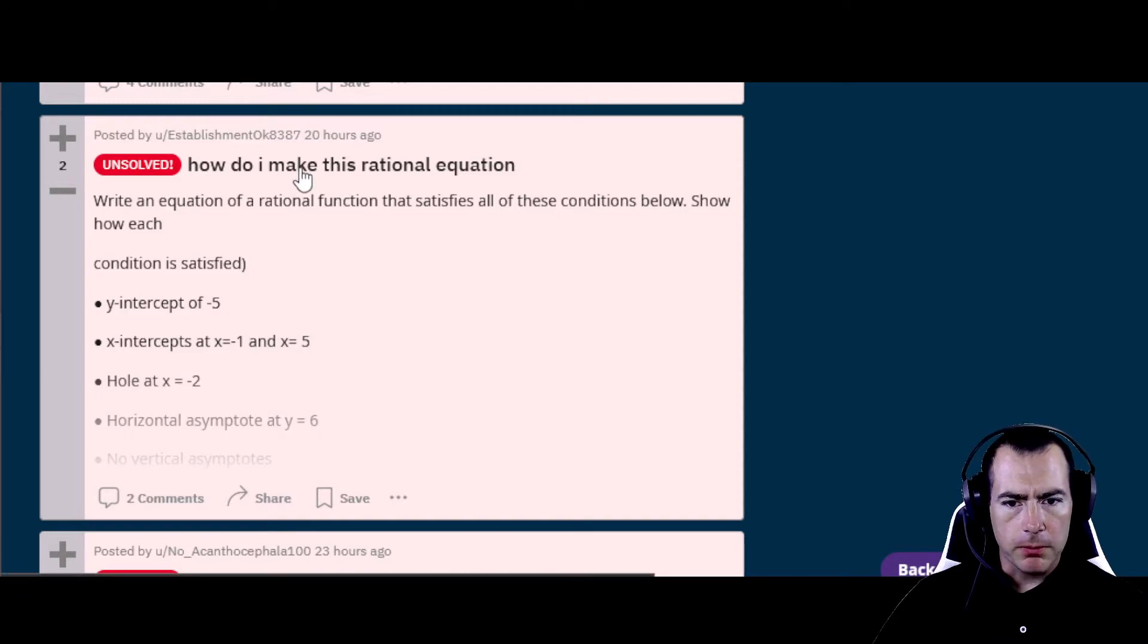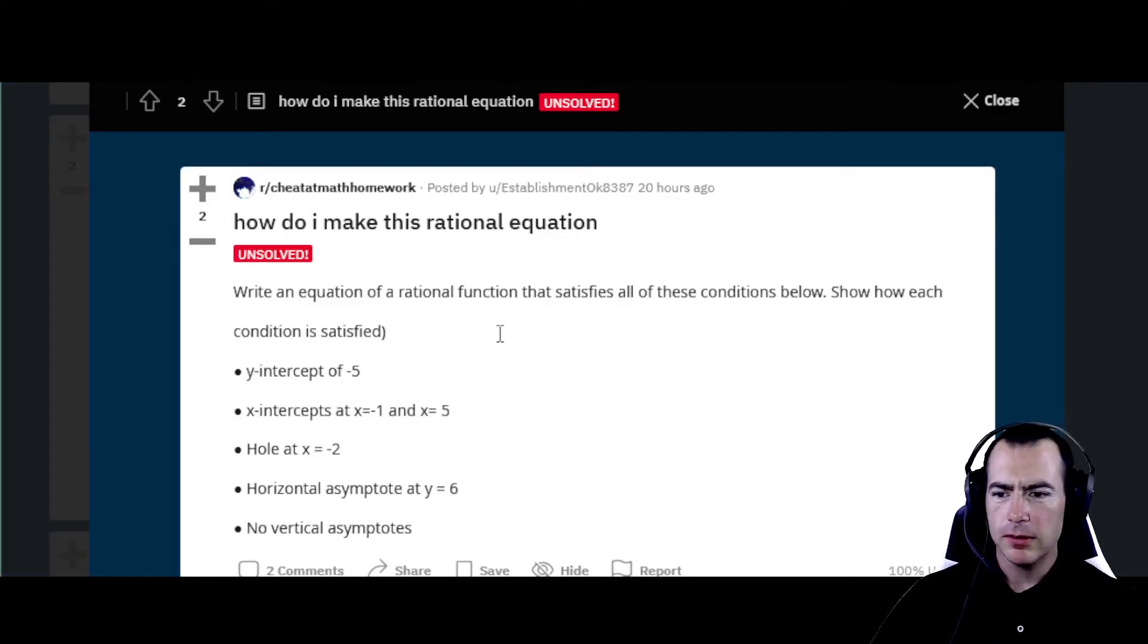All right, this one looks interesting. It says, how do I make a rational equation? Okay, I've seen a few of these where it has lots of different properties for the rational equation or rational function you're trying to build. Stuff like intercepts, holes, asymptotes, and you're trying to build these all into your equation. These are a lot of fun. Let me get my whiteboard all cleared out. And yeah, we'll see if we can give it a go. So what we need for this rational function is it needs to have a y-intercept of negative 5. It needs to have a couple of x-intercepts. It has a hole at negative 2. Some horizontal asymptotes. This is at y equals 6. And it has no vertical asymptotes. All right, excellent. I think we can work with that. Let's give it a go.